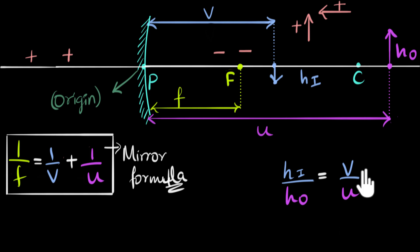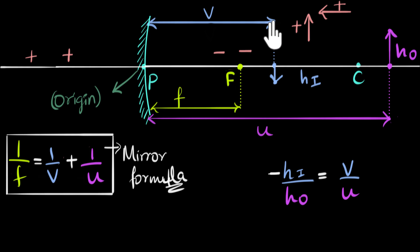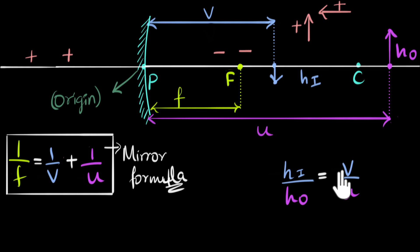Let's now put signs in the height formula to make it general. Hi is the height of the image — that's below the principal axis, so it's negative. Ho is the height of the object, which is above the principal axis, so that's positive. V is the image position, which is negative. U is the object position, also negative. The two negatives for v and u cancel, and if we multiply by minus one, we bring the negative sign across. This is now the general formula usable for any mirror in any case.